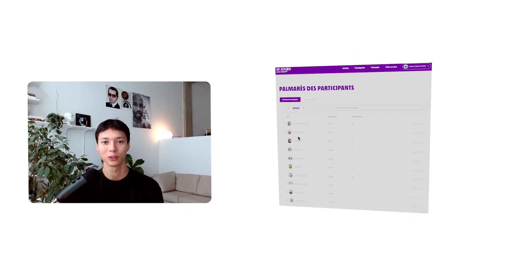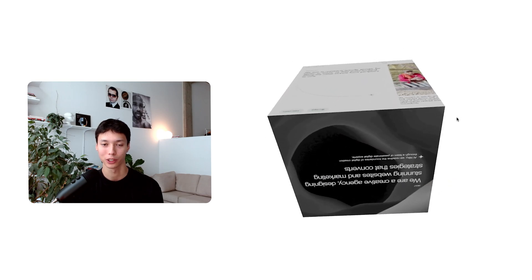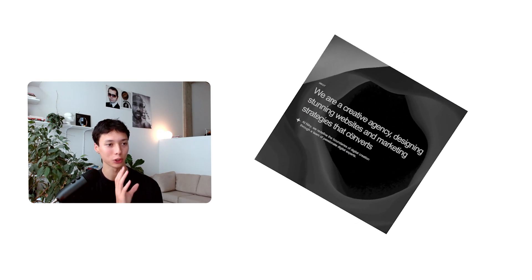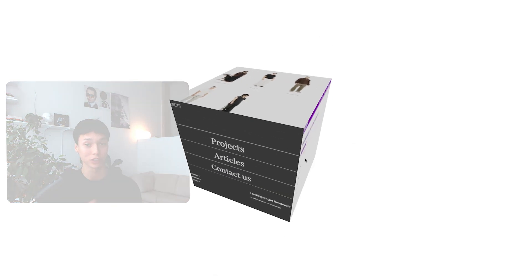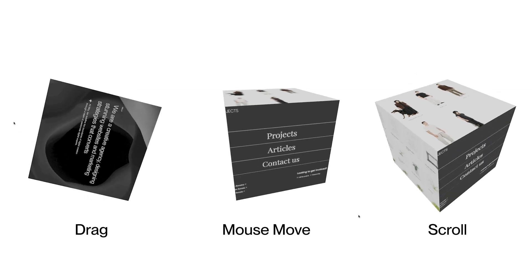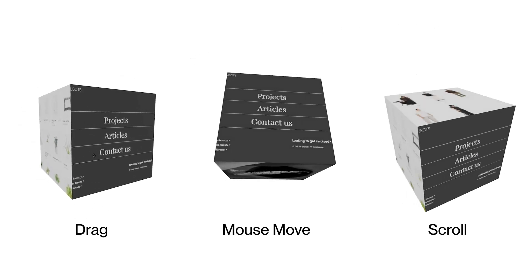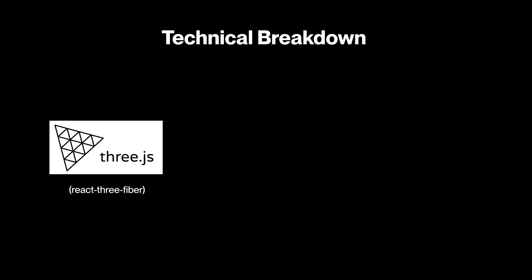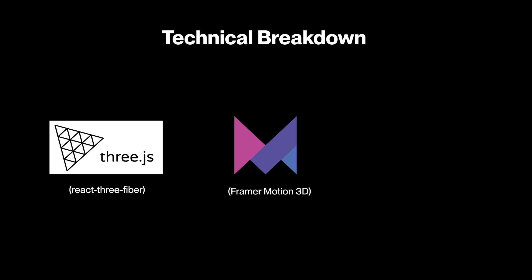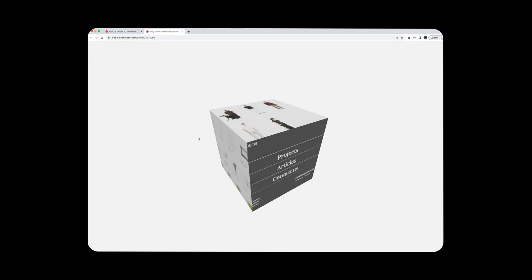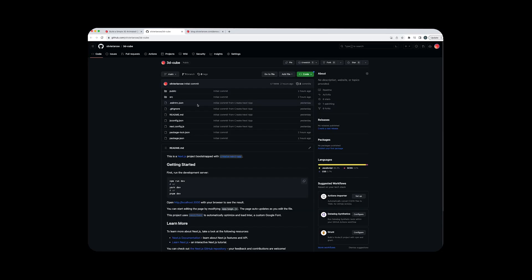What's up guys, welcome back. Today we are taking a look at the basics of 3D. We're going to take a look at how to make a cube, and then we'll animate it using different gestures like the drag, the mouse move event, and the scroll event. We'll take a look at how to do that using Three.js, Framer Motion, and Next.js. The live demo and the source code are both available in the description below.